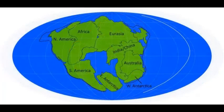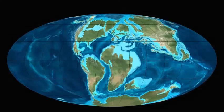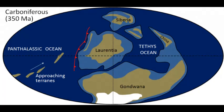When Rodinia broke up, it split into several pieces. One piece eventually produced the most recent supercontinent to have existed, Pangaea, assembled approximately 335 million years ago. Pangaea began to break apart about 175 million years from the present.